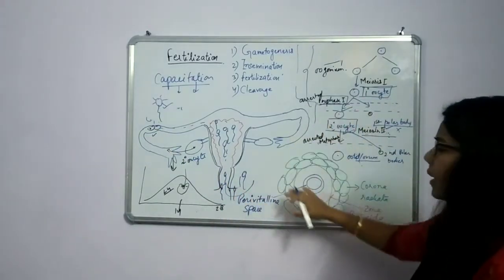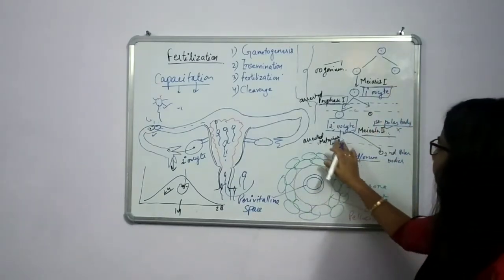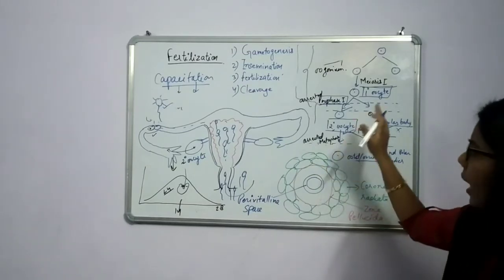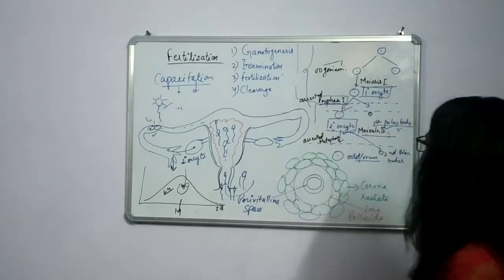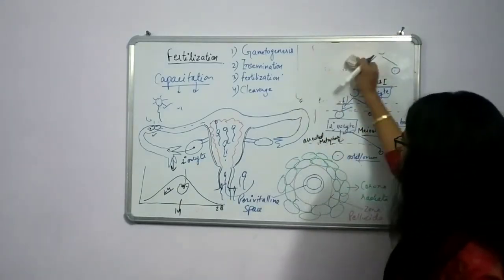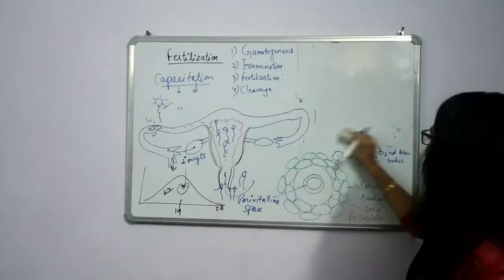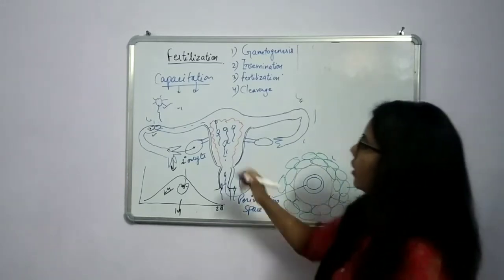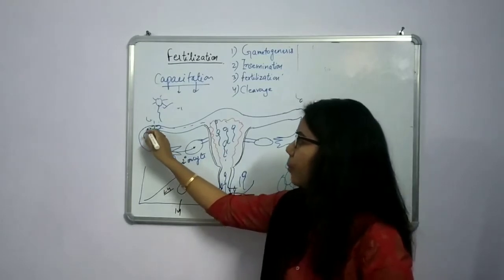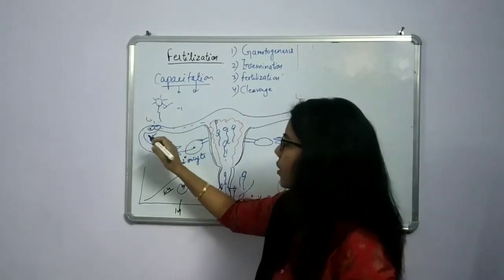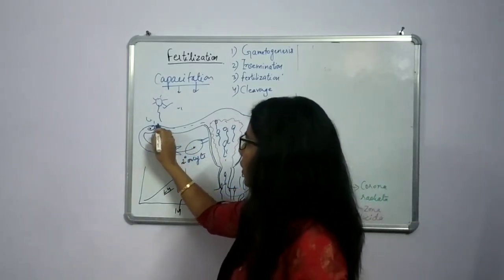We will discuss in a later part how all these things happen. So up to here: the secondary oocyte forms, and this arrested stage will complete when fertilization takes place. The secondary oocyte reaches the ampullar region, and there it connects with the sperm.